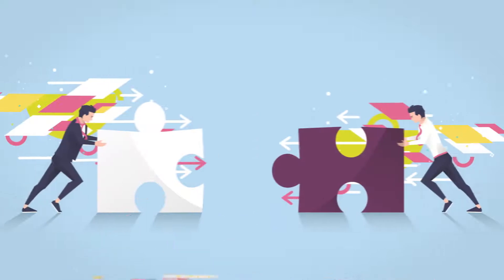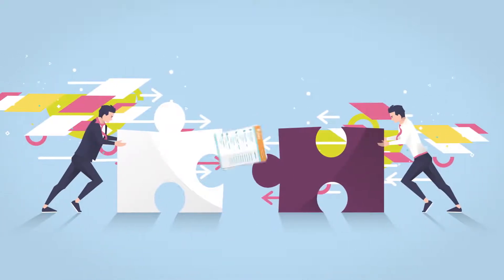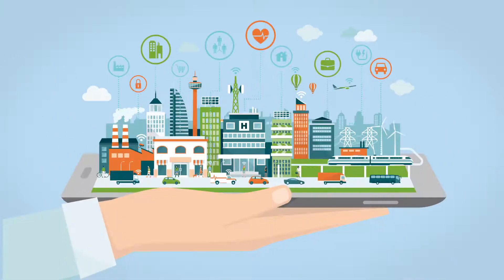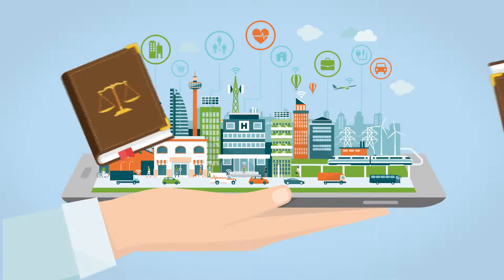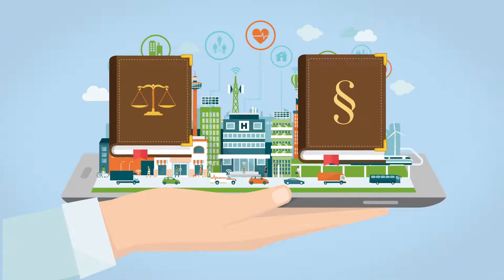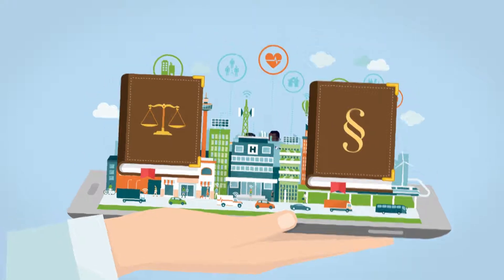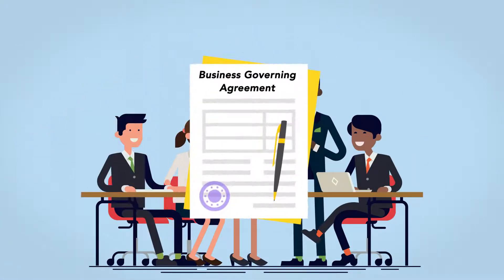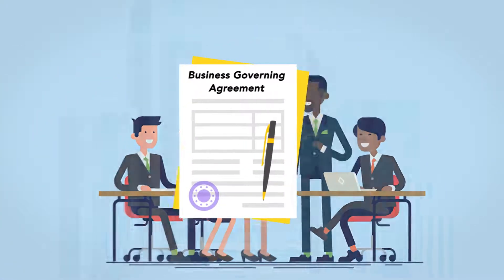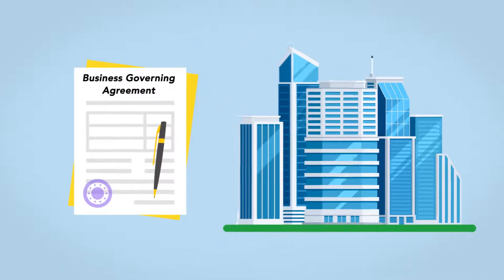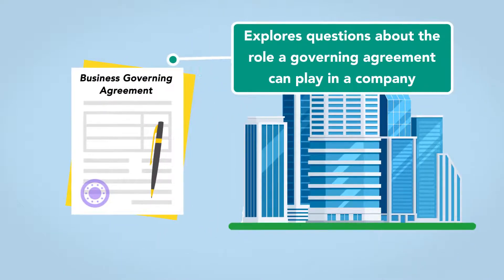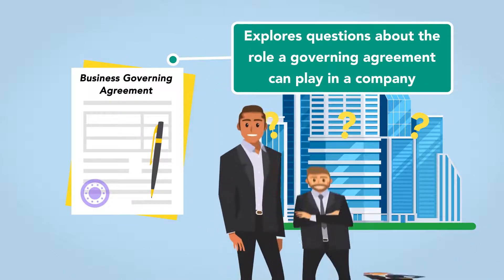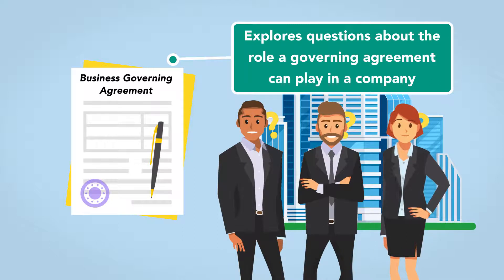What enables successful collaboration is having rules. At the societal level, we have written laws and regulations. At the business level, rules take the form of business governing agreements. This module explores questions about the role a governing agreement can play in a company and whether and when these are necessary.